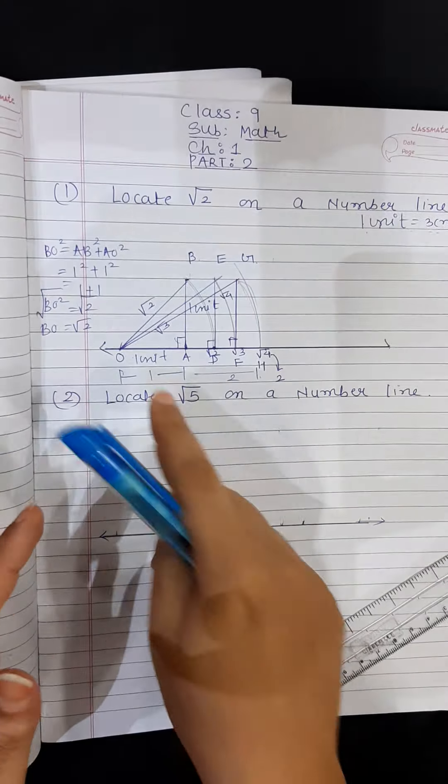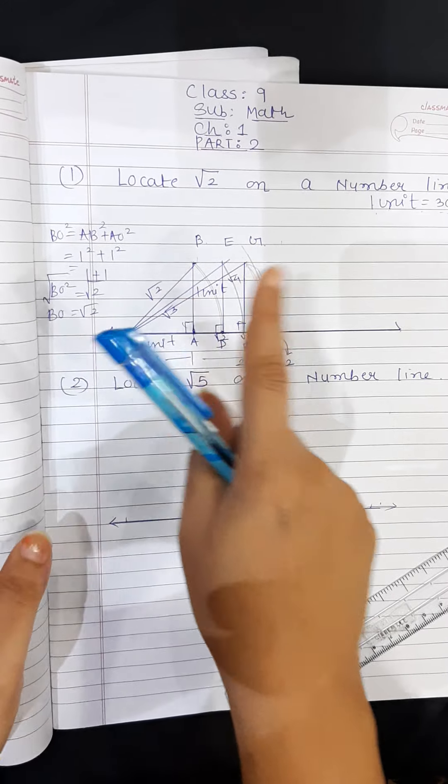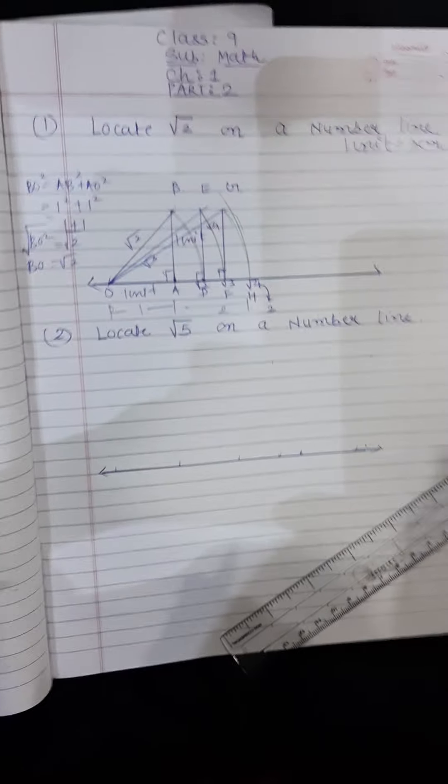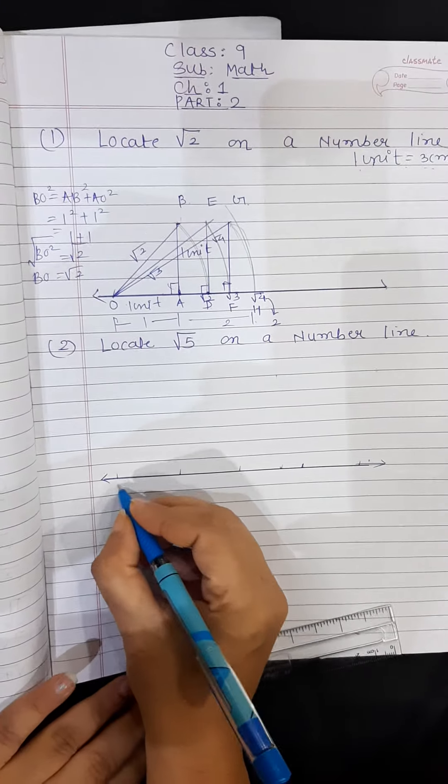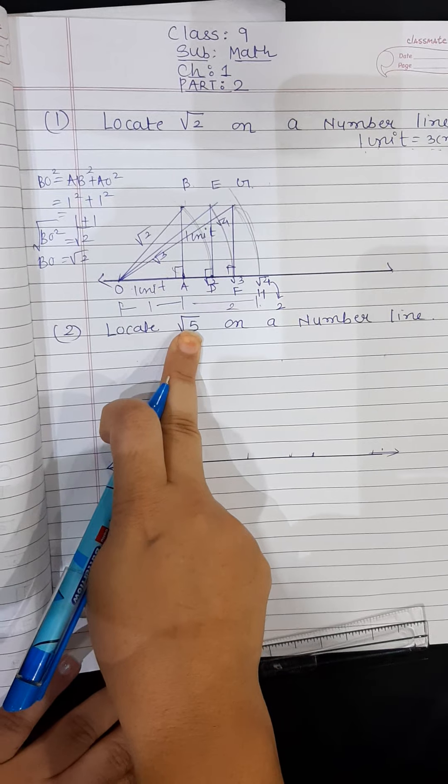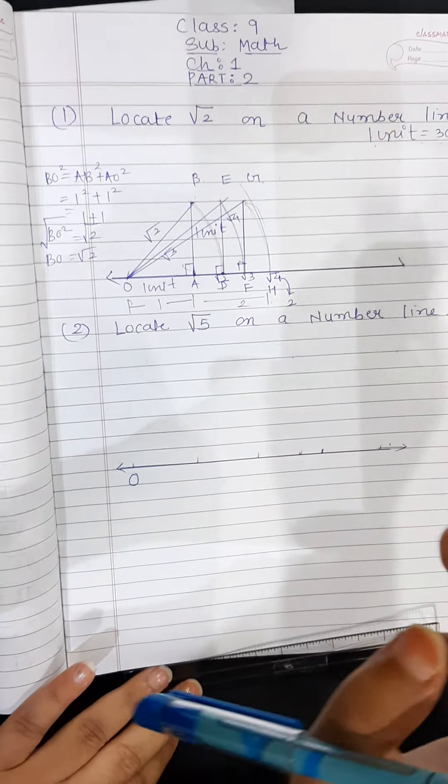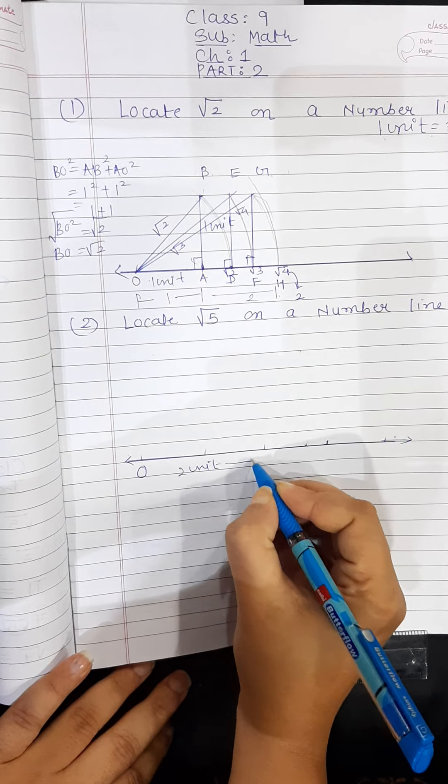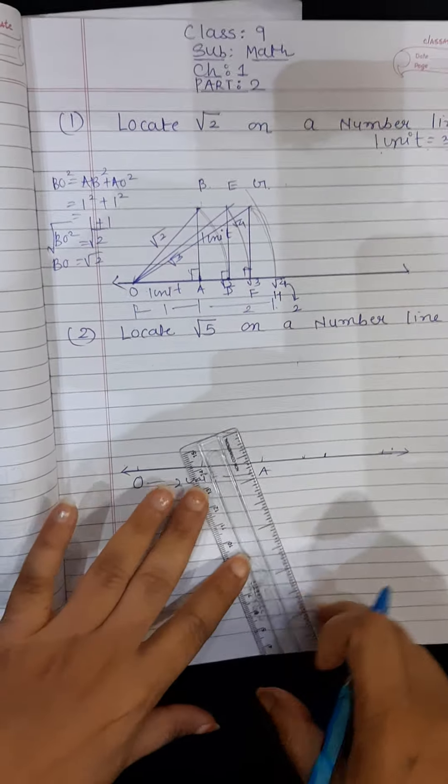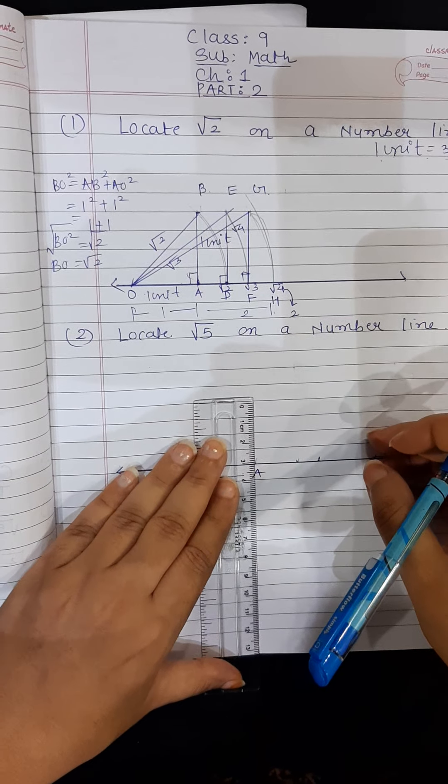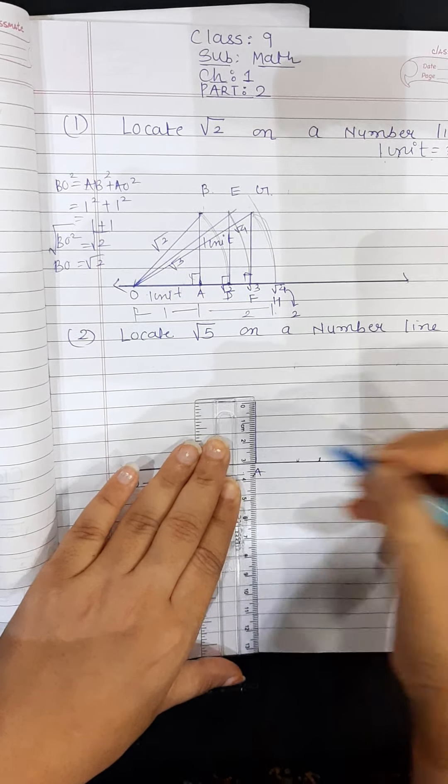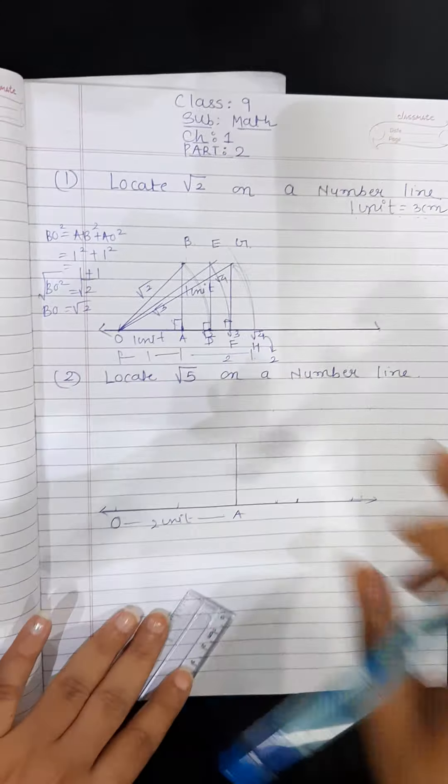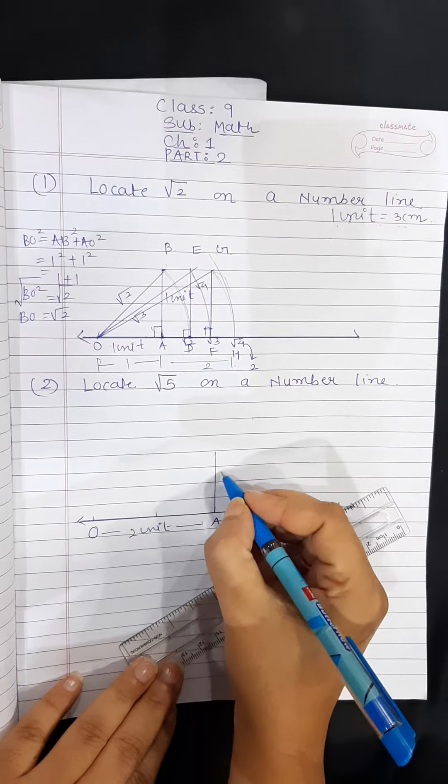Now if they ask you before root 4, you can start from 1 unit, 1 unit. But if they say that locate root 5, root 6, root 7, I will give you the trick what you are supposed to do. You directly start from 2 units because you have to locate root 5. So for locating root 5 you need root 4 and the height 1. So I will take 2 units here which is 6 centimeter. But height always I will take the 1 unit which is 3 centimeter. Now 1 unit is up to you. You can choose 1 unit as 2 centimeter, 2.5 centimeter, 3 centimeter. I generally take 3 centimeter so the figure is not so small or too big. Now this is 2 units and this is 1 unit.